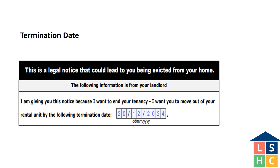This is a 20-day termination notice for the first N5 notice you are giving to your tenant. If this is the second N5 notice you are giving to your tenant within 6 months, it is a 14-day termination notice. When calculating the termination date, the day this notice is served to the tenant is considered day 0, and the next day is day 1.